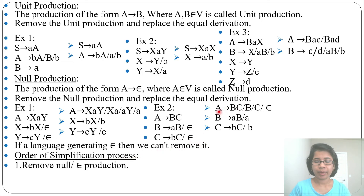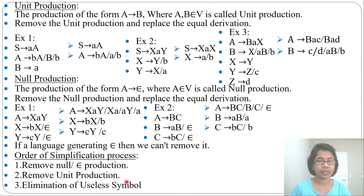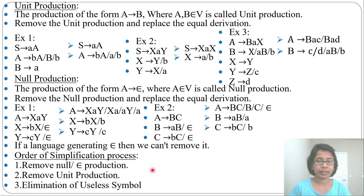The order of simplification is important. First, remove null productions (epsilon productions). After removal of null productions, you may get new unit productions. Second, remove unit productions. Third, eliminate useless symbols. So the sequence is: step 1 — remove null productions; step 2 — remove unit productions; step 3 — eliminate useless symbols. If a variable is not reachable from the start symbol, or not deriving any string, it is a useless symbol and can be removed. If any doubt, just ask in the comments. Thank you.